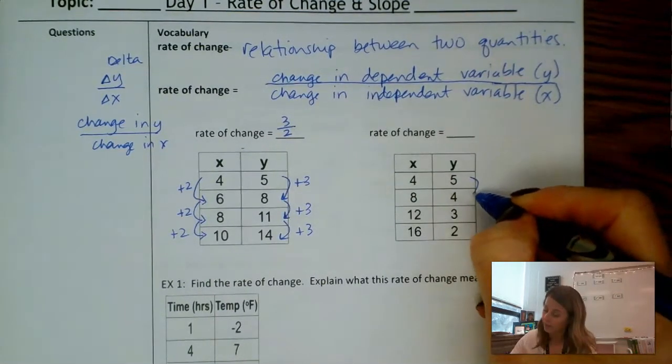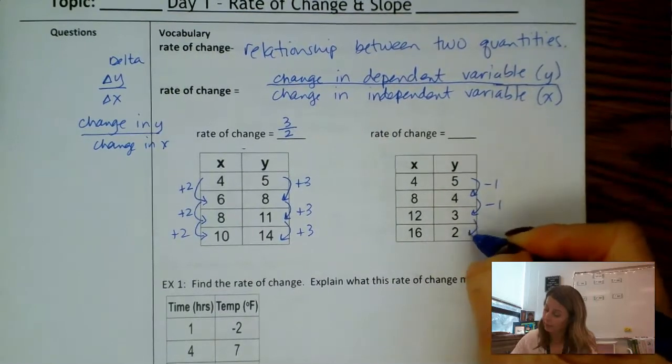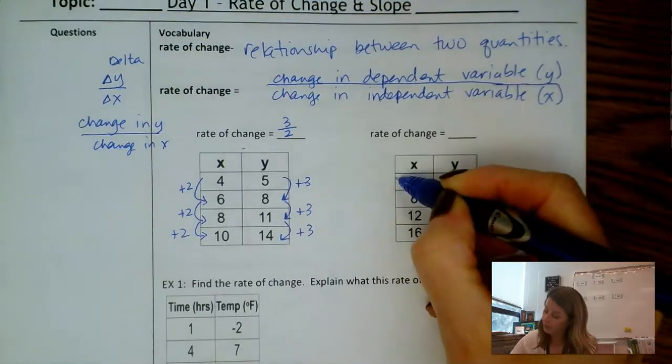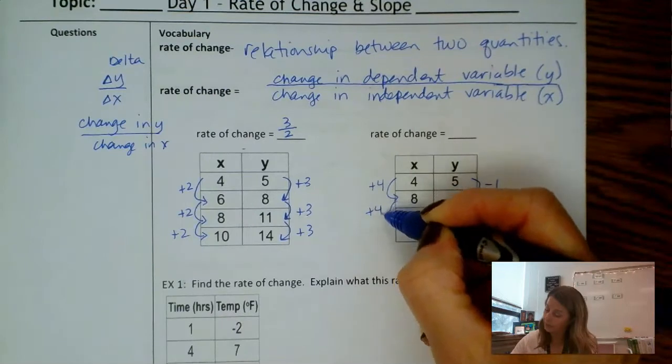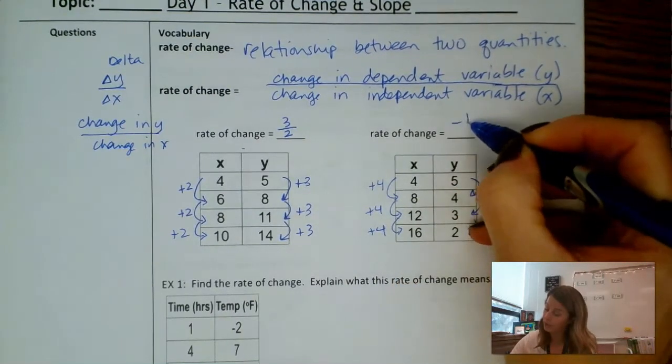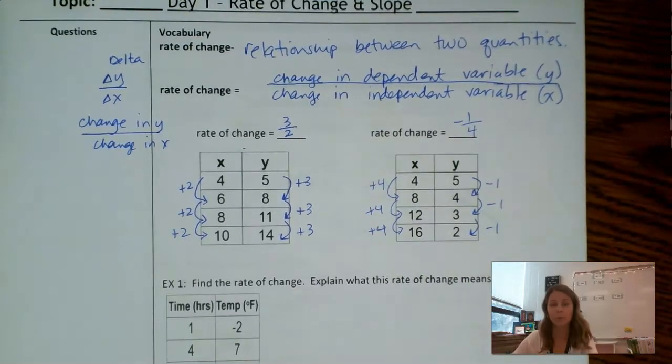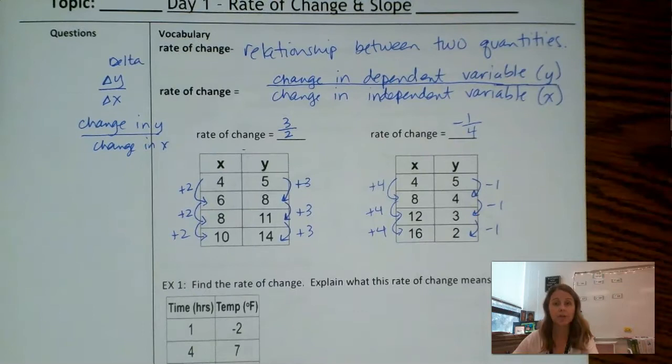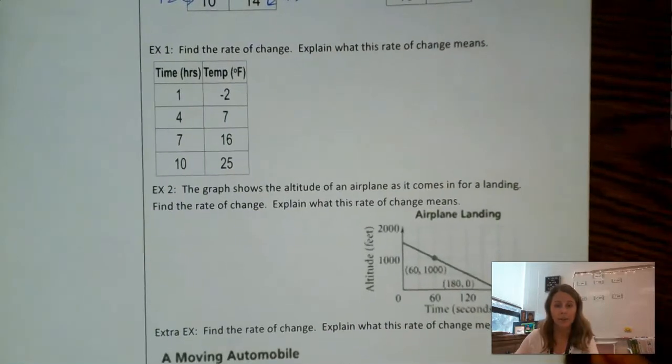Alright, I am going down by 1, down by 1, down by 1. And then the x's look like they're going a plus 4, another plus 4, plus 4. So my rate of change is negative 1 fourth. That's also my slope. When you are asked to find the rate of change you're finding the slope. They're the same thing.